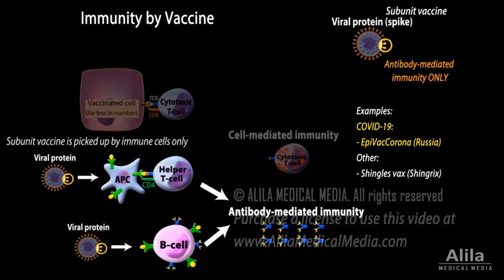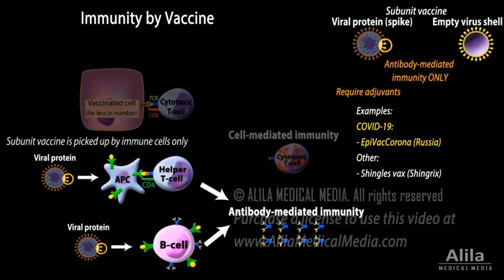certain substances, called adjuvants, are usually added to stimulate the antigen-presenting cells to pick up the vaccine. A subunit vaccine may also consist of empty virus shells without genetic material. Having a typical size and shape of a pathogen, these vaccines may not require adjuvants to be perceived as danger, but they can be difficult to produce.